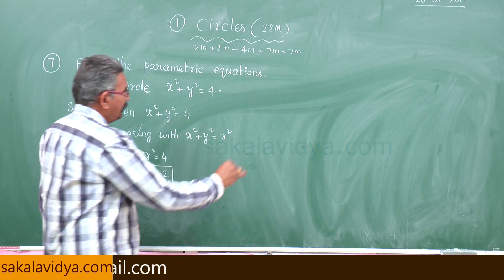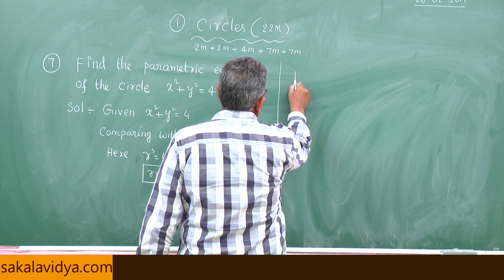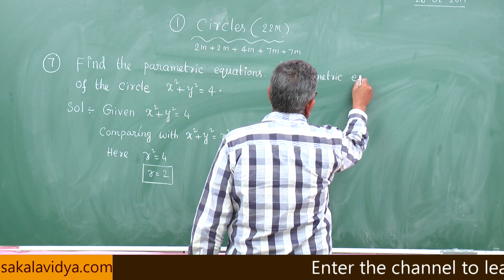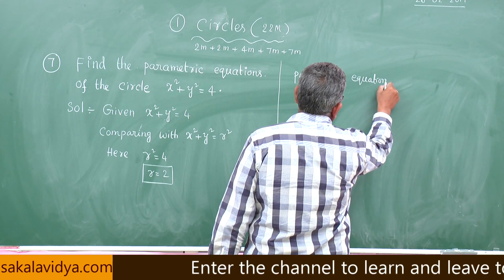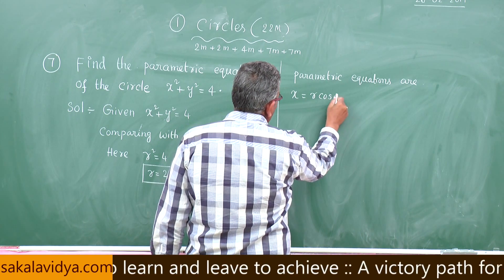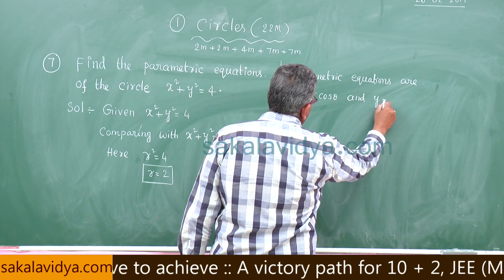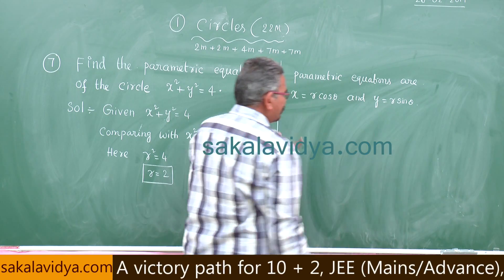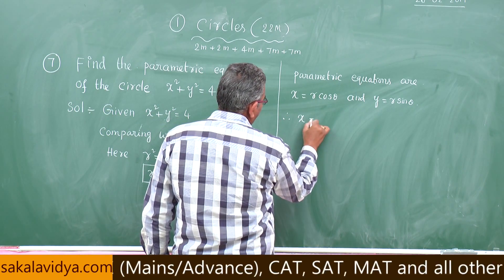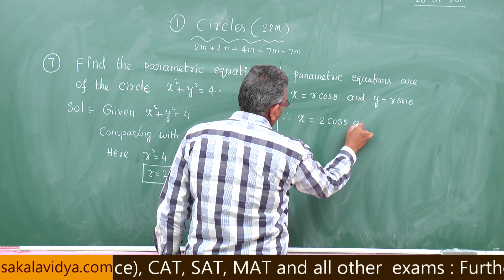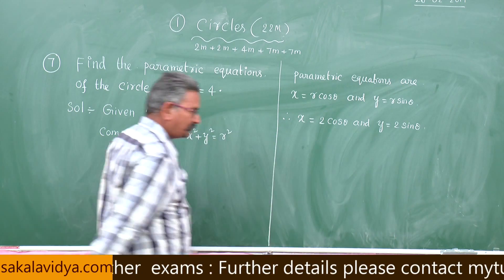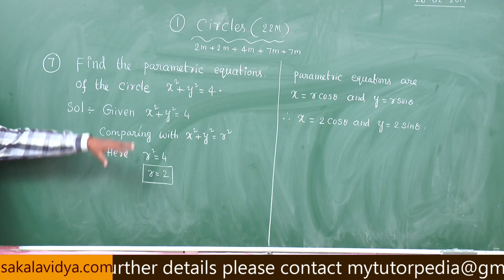The parametric equations are x equals r cosθ and y equals r sinθ. Replacing r with 2, we get x equals 2 cosθ and y equals 2 sinθ.